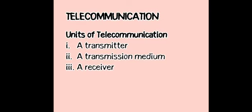We have three units of telecommunication. We have the transmitter, which takes information and converts it to a signal. We have the transmission medium, also called the physical channel, which carries the signal. And there is the receiver, which takes the signal from the transmission medium and converts it back into usable form.